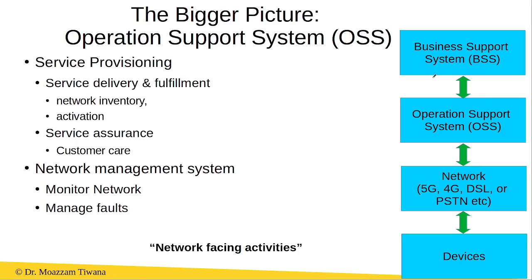In the previous step, we have seen that the BSS sends the order to the OSS, and OSS is responsible for the service provisioning related to this order. So in order to deliver this service, first OSS needs to check with the network inventory if there are sufficient resources available for this service or not.